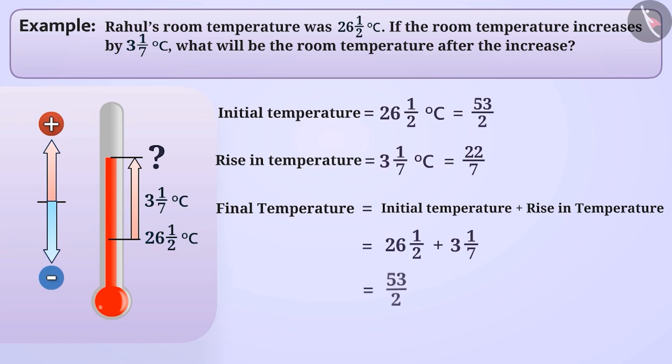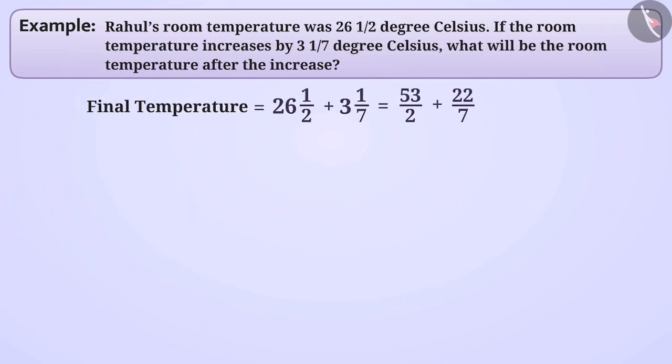First, we will make the denominator equal using the method of LCM of 2 and 7, that is 14, so we multiply both the numerator and denominator of 53 by 2 by 7, so that we get the corresponding rational number 371 by 14.